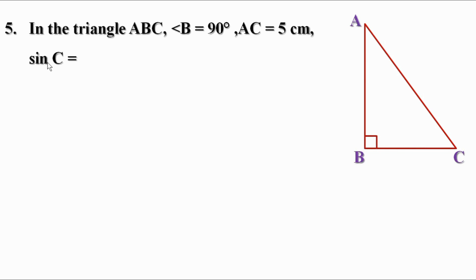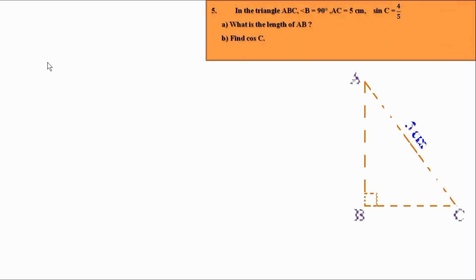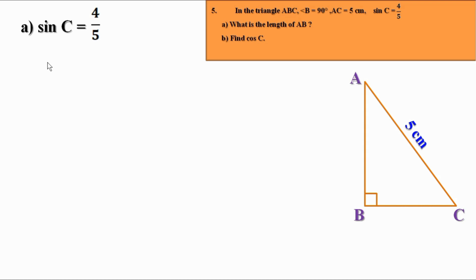Fifth question. In triangle ABC, angle B equals 90 degrees, AC equals 5 cm, and sin C equals 4 by 5. What is the length of AB? Since sin C equals 4 by 5, when the hypotenuse is 5, the opposite side is 4. Here, the opposite side of angle C is AB. Therefore, AB equals 4 cm.